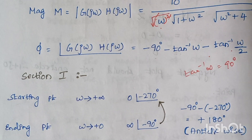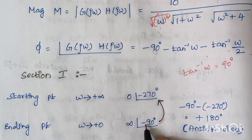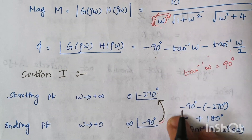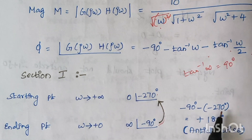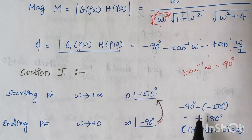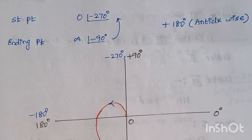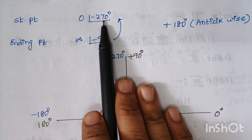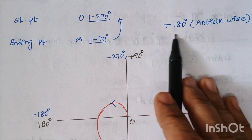To find the rotation: we subtract the starting phase from the ending phase. That is minus 90 minus of minus 270, giving minus 90 plus 270 equals plus 180 degrees. The plus sign indicates the Nyquist plot moves in the anticlockwise direction. So section 1 starts at zero magnitude at minus 270 degrees, ends at infinity magnitude at minus 90 degrees, rotating anticlockwise by 180 degrees.